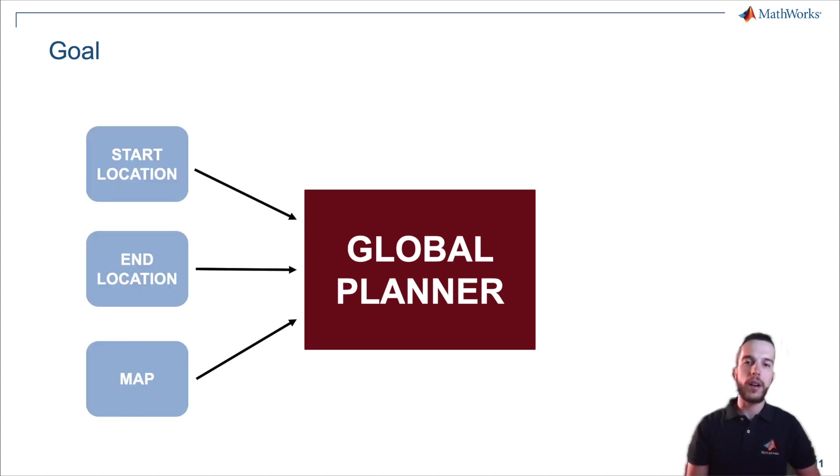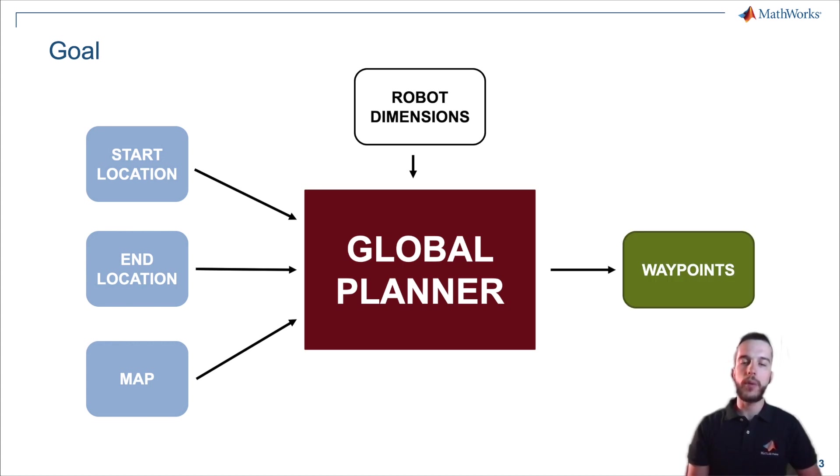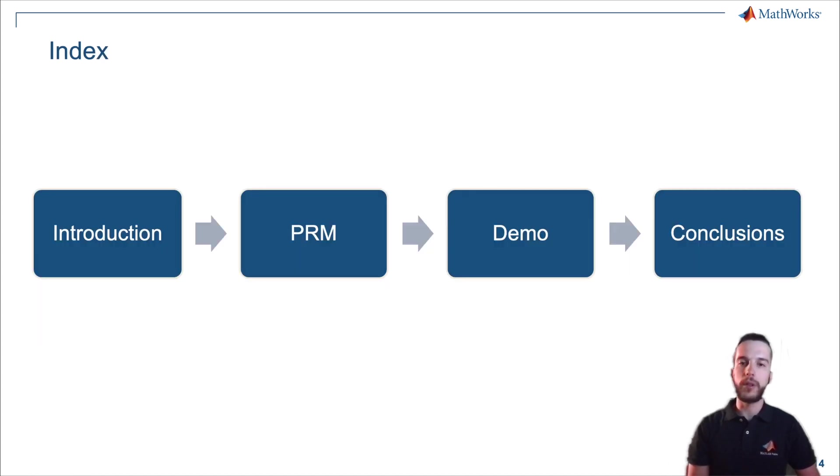We want a block, a system that starts from three inputs: the start location of the robot, the end desired location, and the map the robot is navigating. In addition, we need the robot dimensions to account for the robot's occupancy. The output is the waypoints that compose our path.